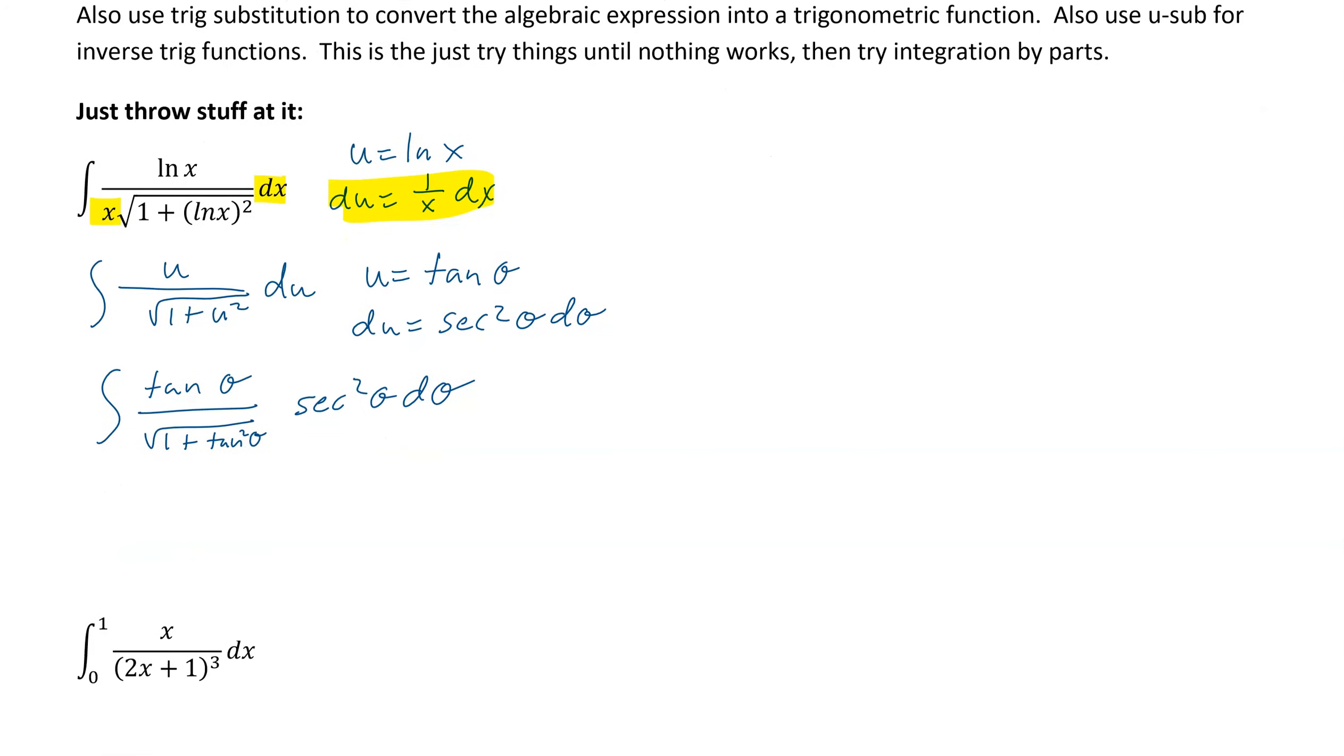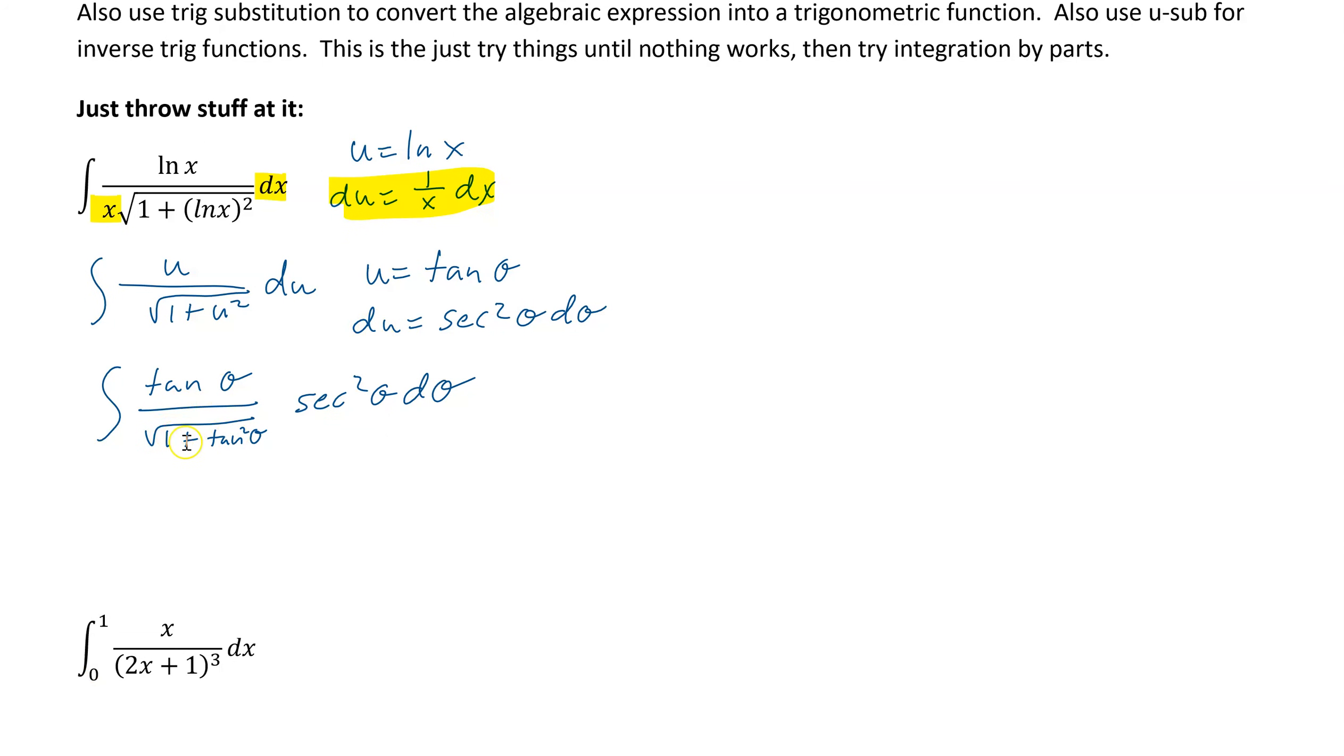And if you remember, the reason we do that is to turn this into secant squared, and then the square root makes it secant theta. So that denominator is now secant theta, and then those secants will cancel, leaving us with tangent secant. So I'm going to move this up here, and we end up with tangent theta, secant theta, d theta, and then that obviously is secant theta plus c.